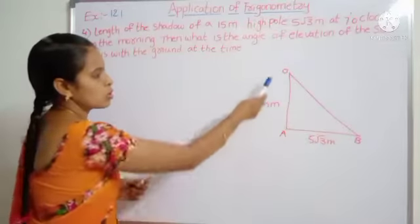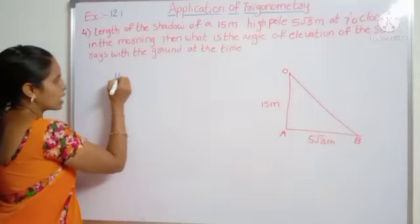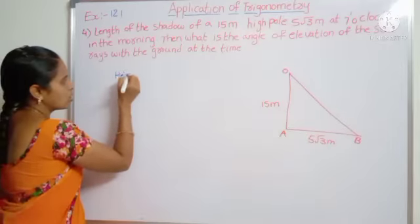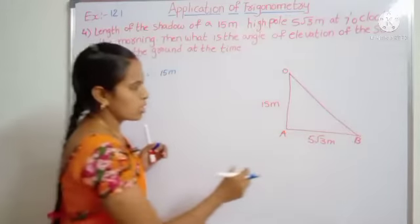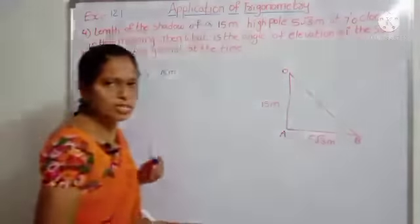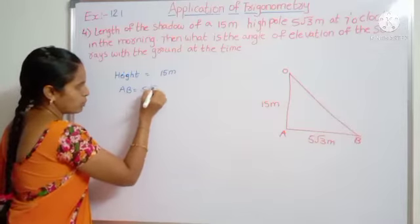What are the given values? OA is the height of the high pole. Height is 15 meters. Next one, shadow is AB equal to 5 root 3 meters.